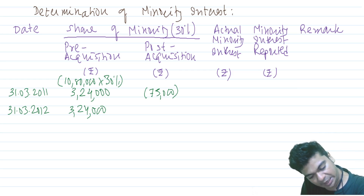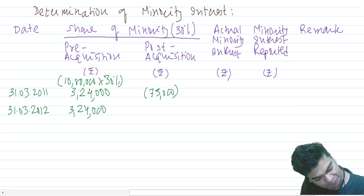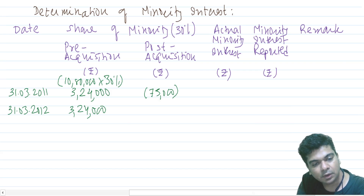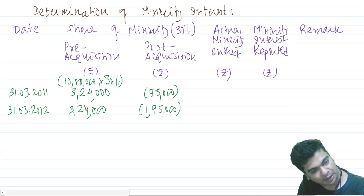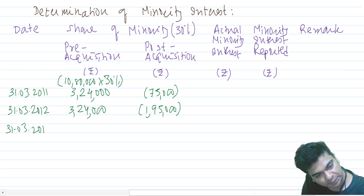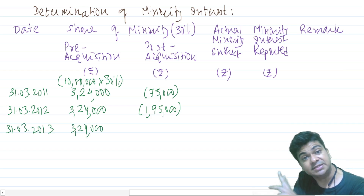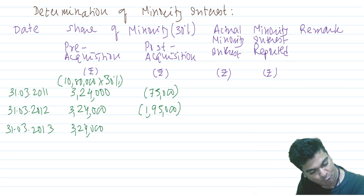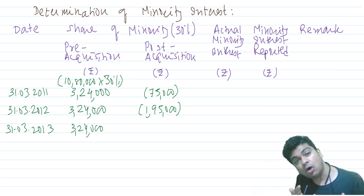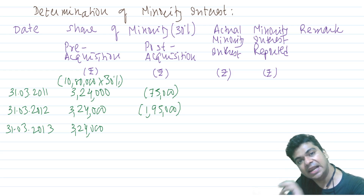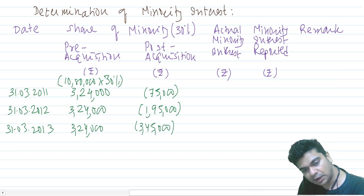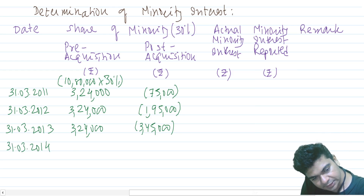In the year ending 31st March 2012, there is a further loss of 4,00,000. Adding the previous year's loss of 2,50,000, total post-acquisition loss is 6,50,000. Multiply by 30%, giving negative 1,95,000. For 31st March 2013, pre-acquisition share remains 3,24,000. In this third year, after losses of 2,50,000 and 4,00,000, there is a further loss of 5,00,000. Total post-acquisition loss is now 11,50,000. So 11,50,000 into 30% = negative 3,45,000.